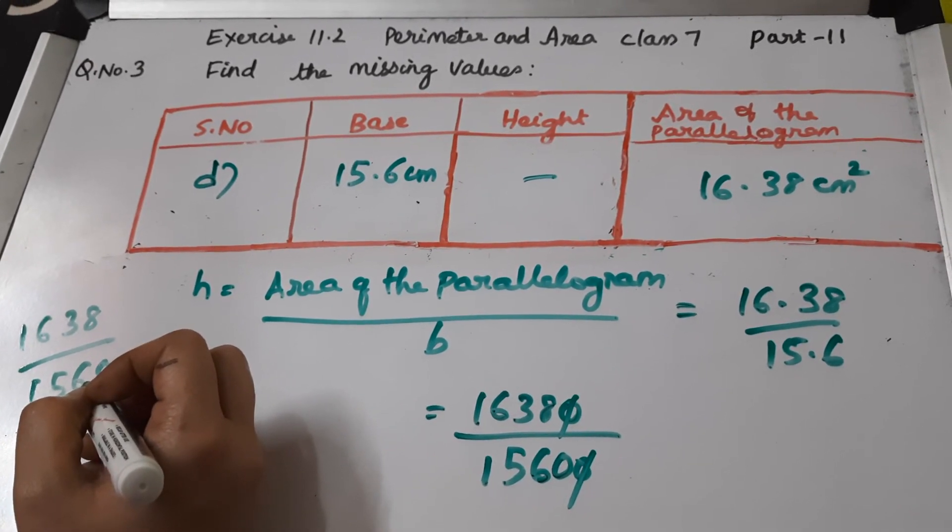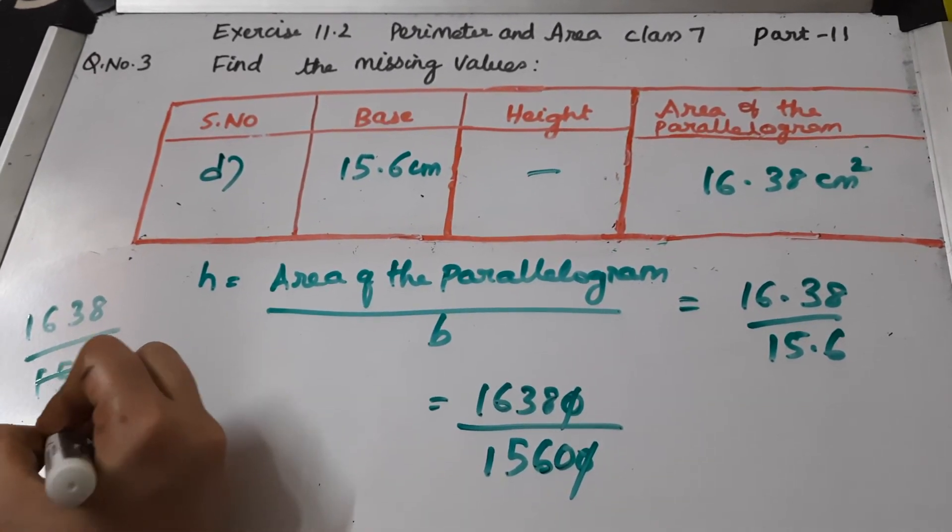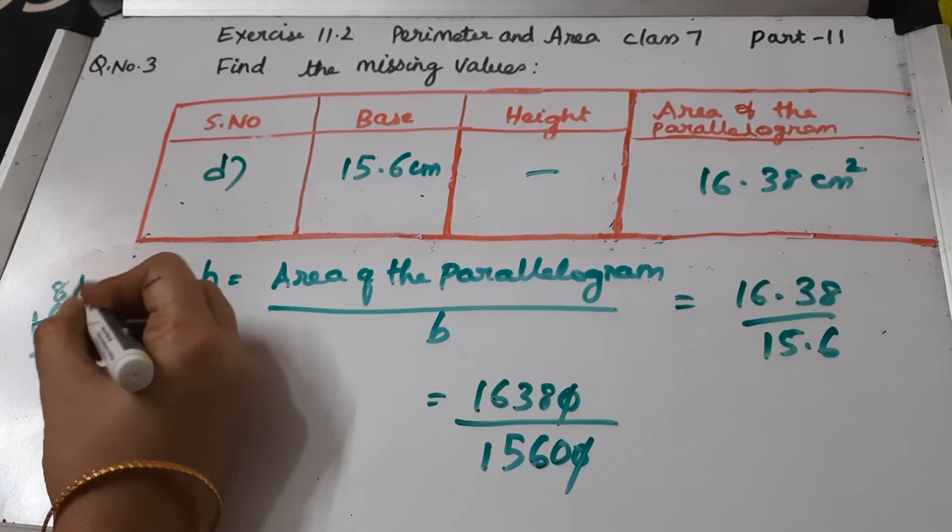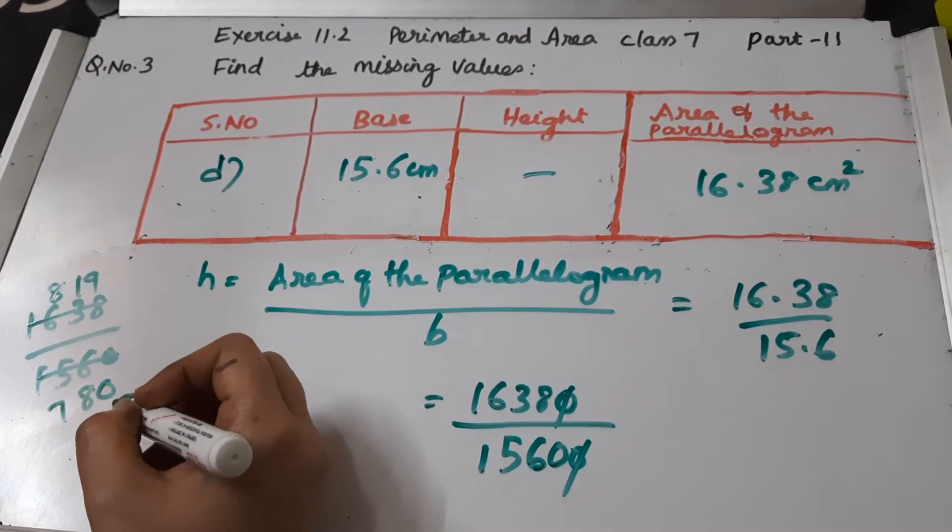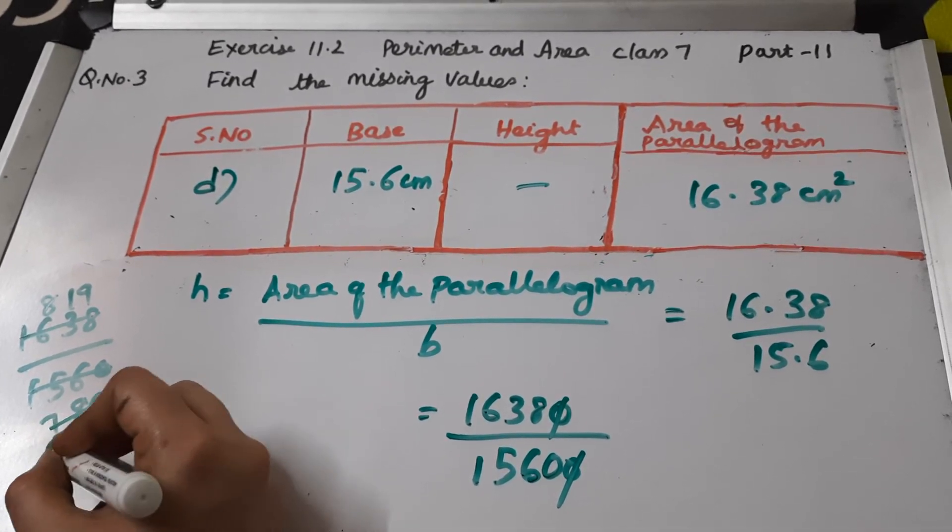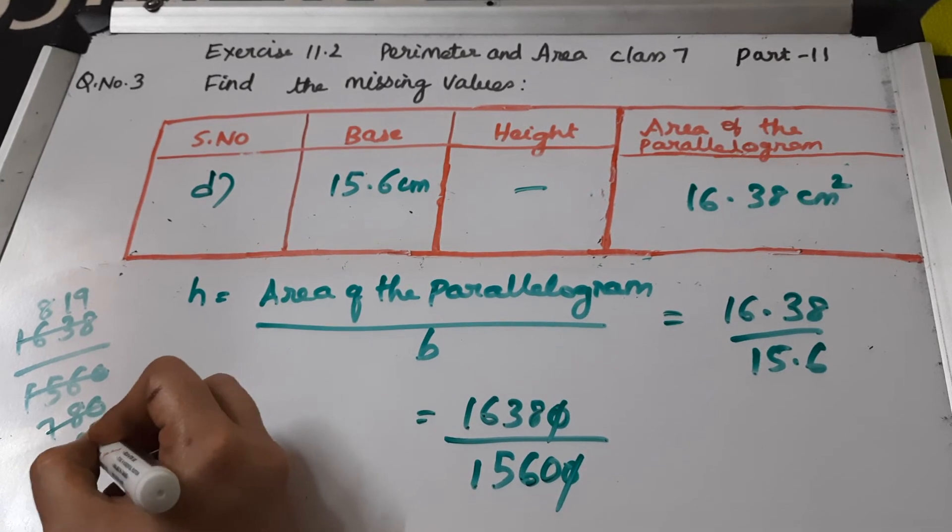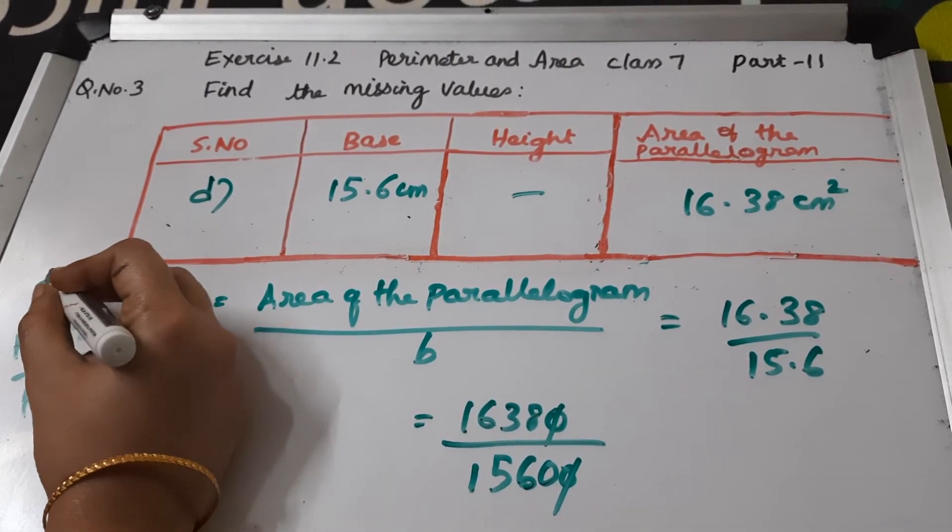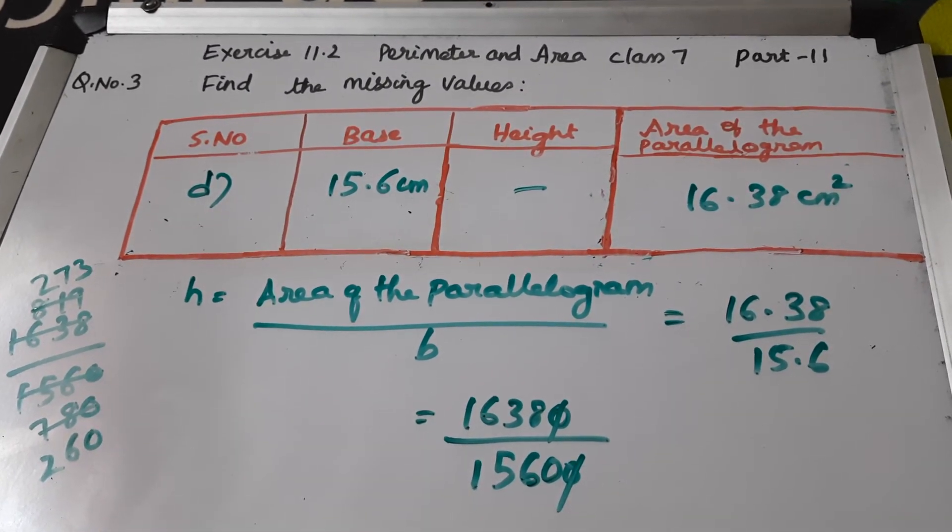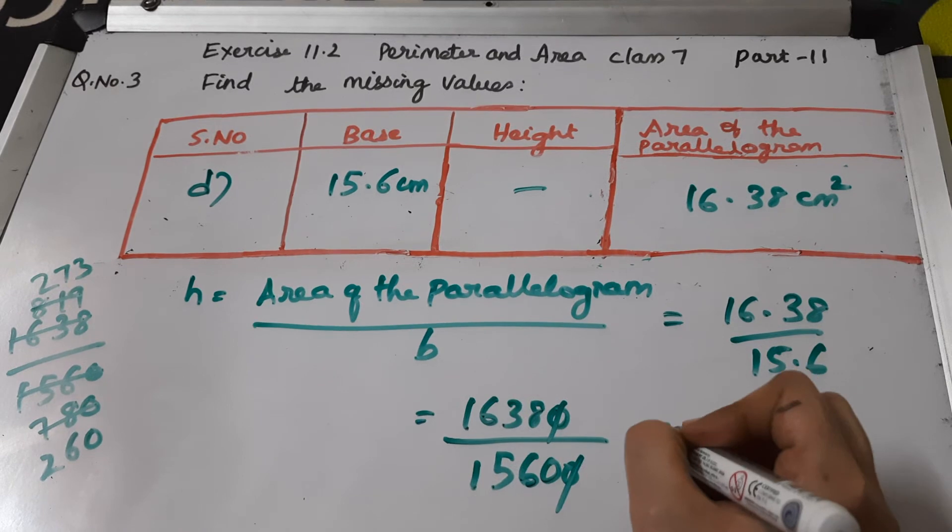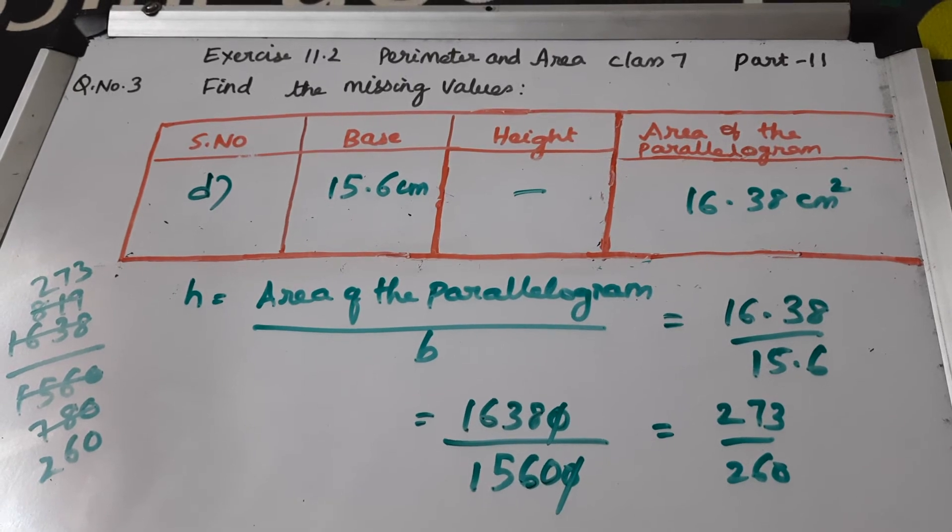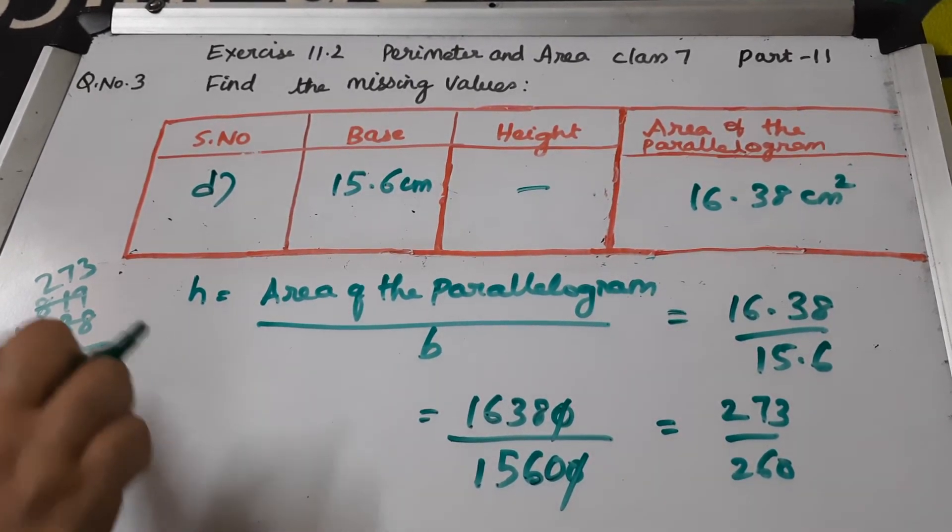Now this will be simplified by 2 table: 819 by 780. When you look at this, it can be simplified by 3 table: 273 by 260. Now it cannot be further simplified. So you get the answer here, 273 by 260. Please quickly copy this so that we will go to the next calculation. That is, we have to divide this.